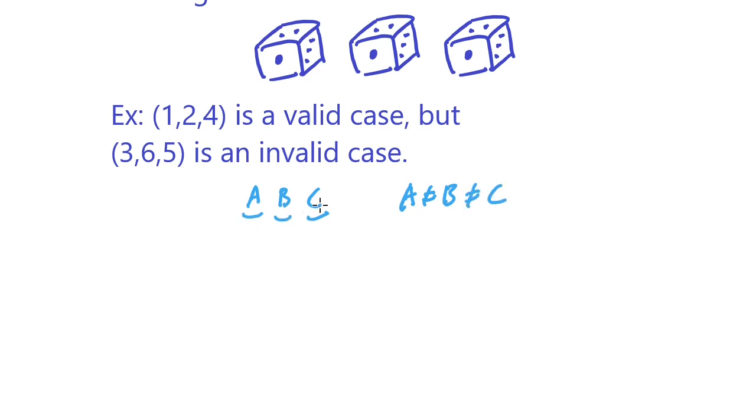How many ways are there to roll three distinct numbers? For the first number you have six choices, for the second number you have five choices because once the first number is taken you only have five choices left, and then for the third number you have four choices.